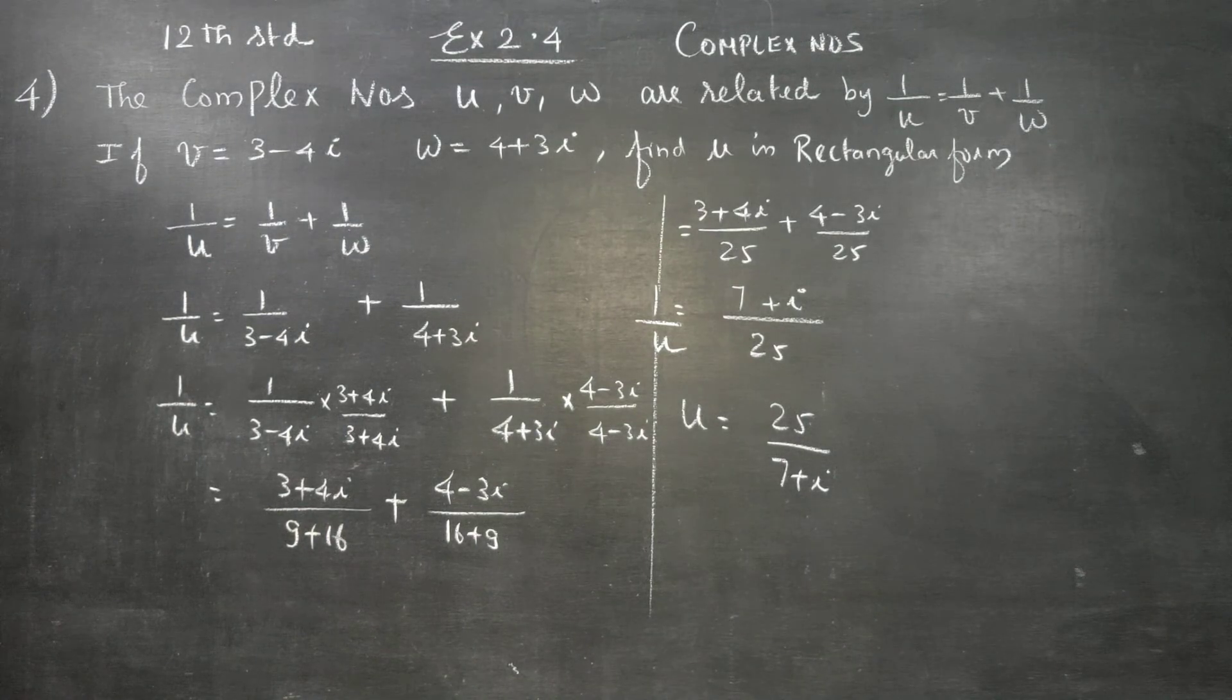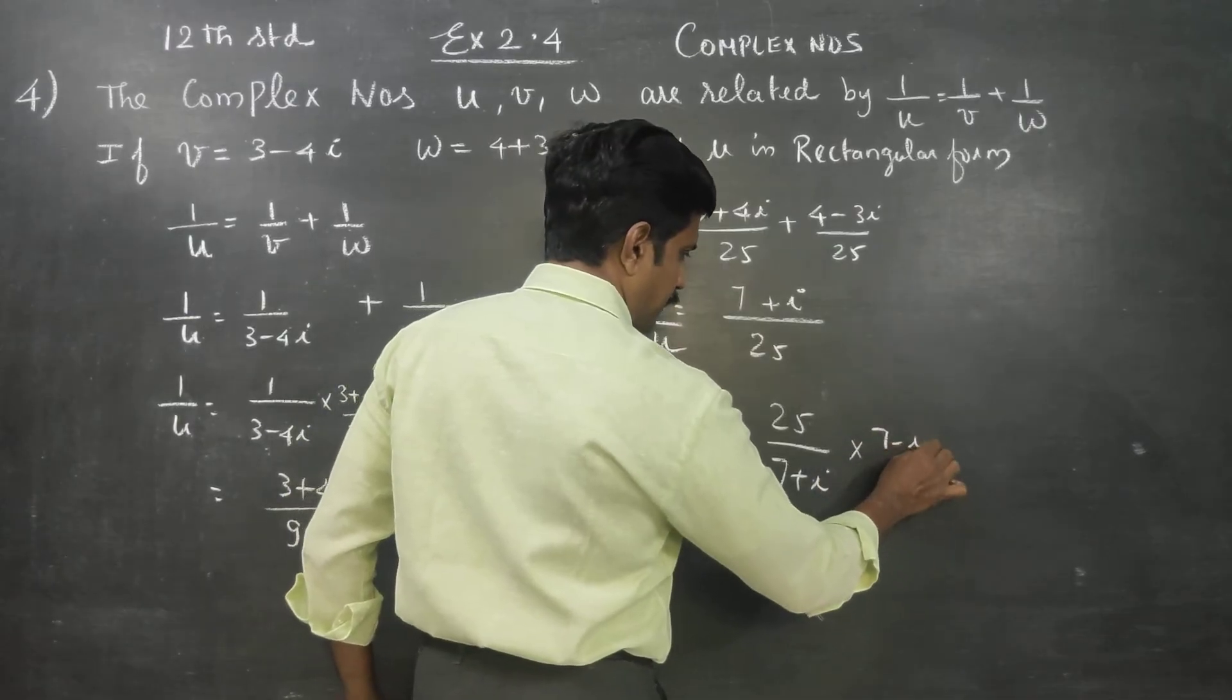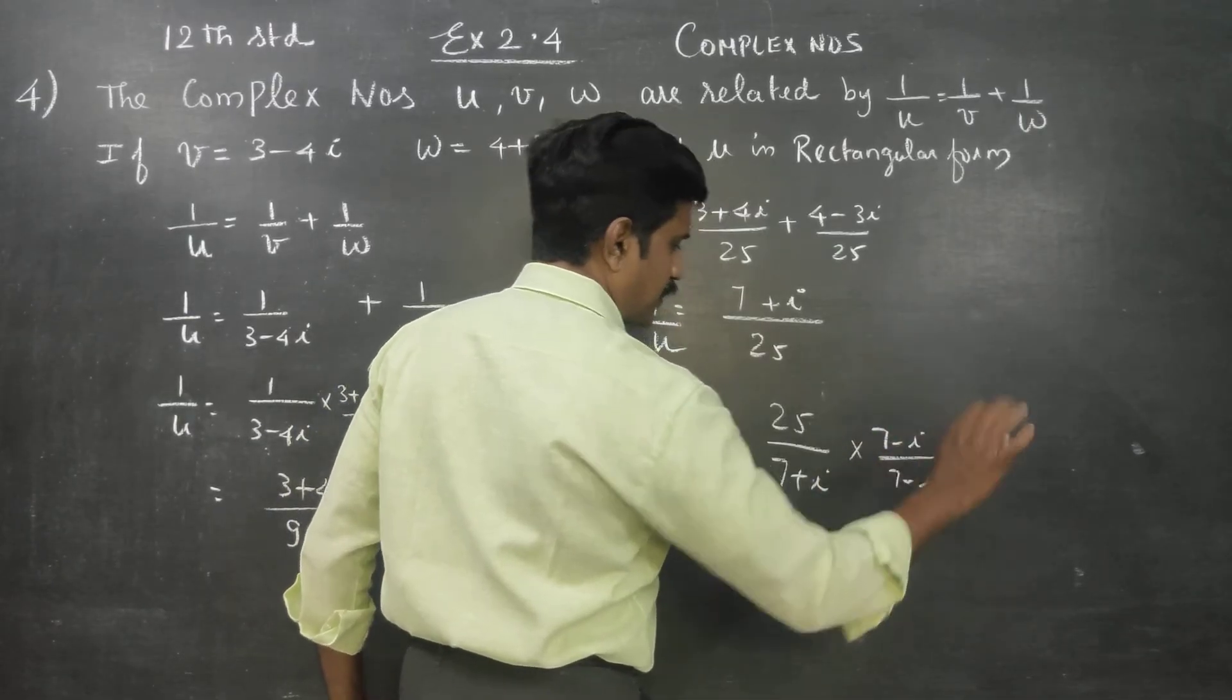We need rectangular form. What do we do? Multiply by conjugate: 7 minus i by 7 minus i.